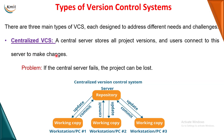The second type is the centralized version control system. Instead of saving project data in a single local system, a server repository is created at a remote location, and different developers save their project information to that server. The advantage is that even if your local system crashes, you have a copy on the server. The disadvantage is if the server completely fails, then all the project data saved by all developers is totally lost.